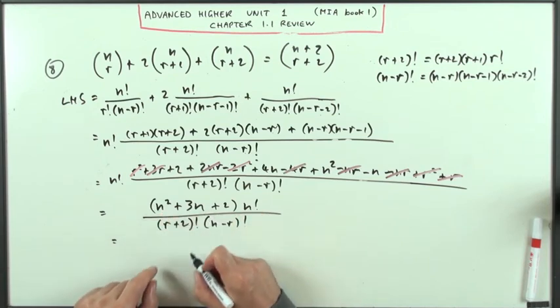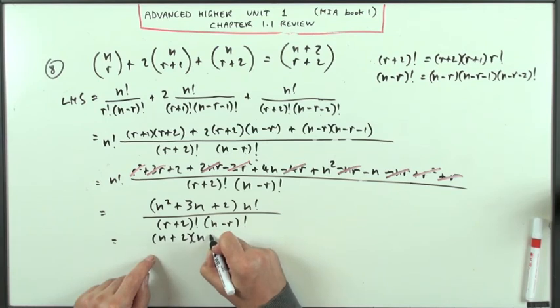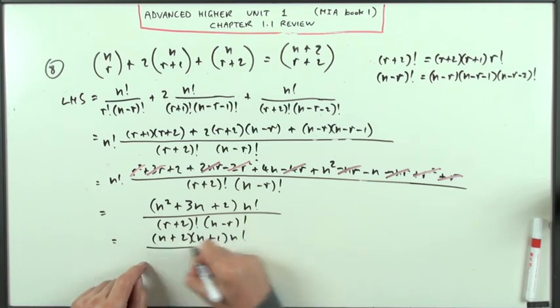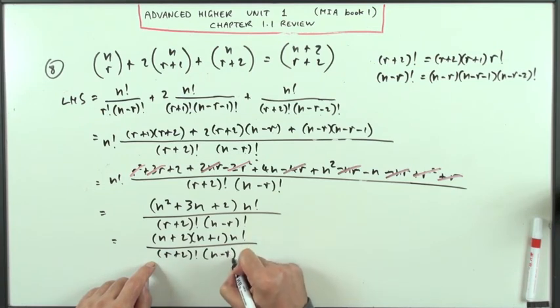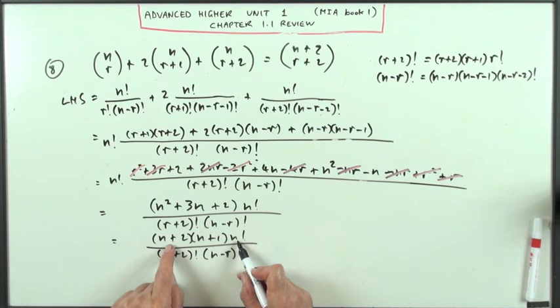Now that factors to n plus two times n plus one, over r plus two factorial, n minus r factorial. And of course that just builds up to n plus two factorial, because it's the one less, then the one less again.